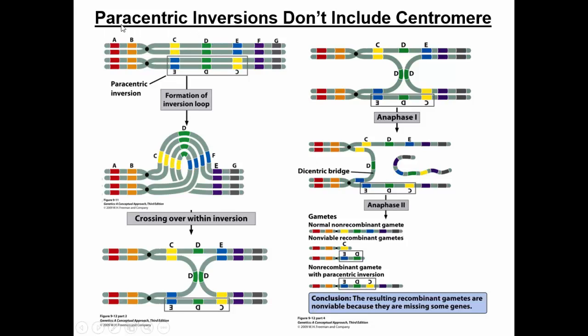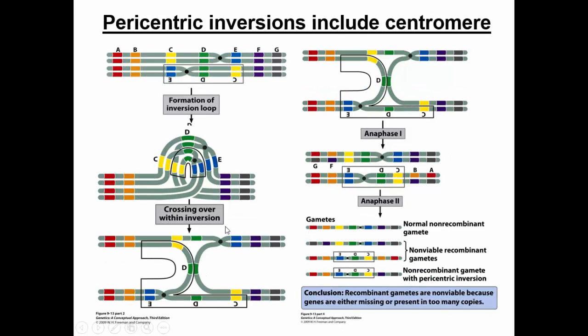The first type of inversion is a paracentric inversion, which does not involve the centromere. You can see the original sequence, and here the sequence is flipped, but the centromere is not included in the flipped portion. The other type is a pericentric inversion, and it does involve the centromere. You can see that we have a flipping of genes C, D, and E, and the location of the centromere has changed. Pericentric inversions can often be much more severe than paracentric inversions because there can be a lot of problems during cell division due to the centromere location having changed, so the two chromosomes no longer have centromeres at the same location.